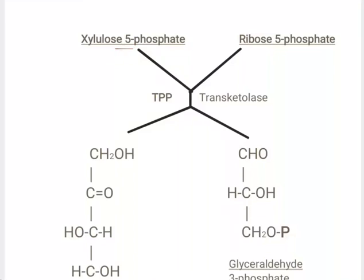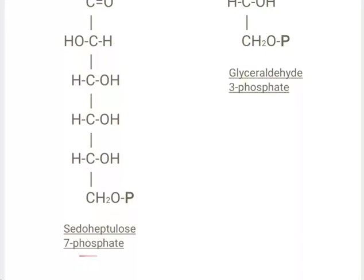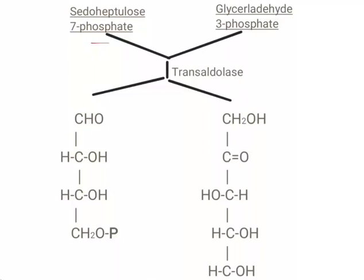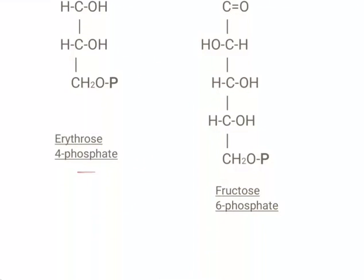Two molecules of xylulose-5-phosphate and 2 molecules of ribose-5-phosphate, in the presence of the enzyme transketolase, which is thiamine pyrophosphate dependent, get converted into 2 molecules of sedoheptulose-7-phosphate and 2 molecules of glyceraldehyde-3-phosphate. Then, 2 molecules of sedoheptulose-7-phosphate and 2 molecules of glyceraldehyde-3-phosphate, in the presence of the enzyme transaldolase, get converted into 2 molecules of erythrose-4-phosphate and 2 molecules of fructose-6-phosphate.